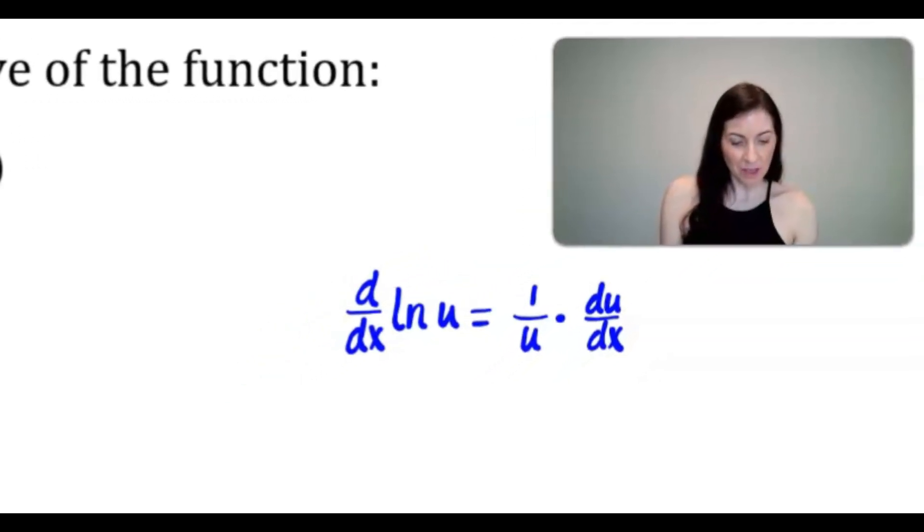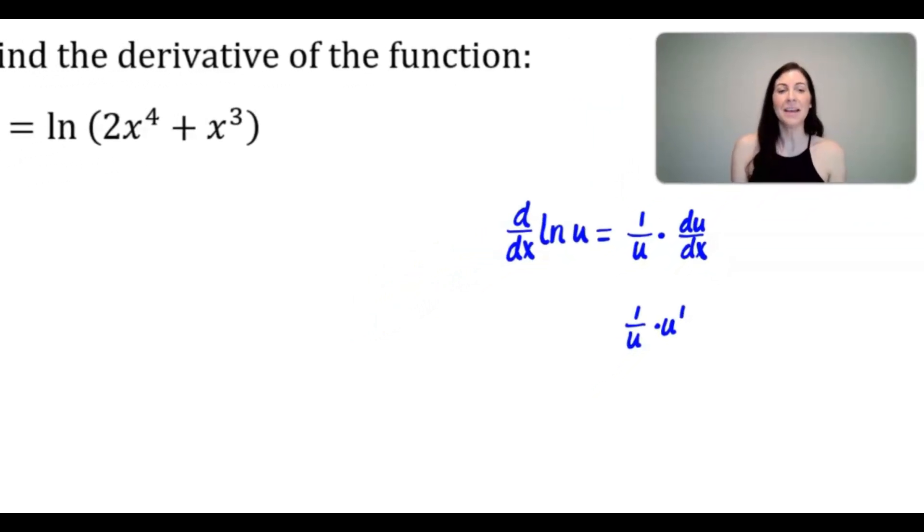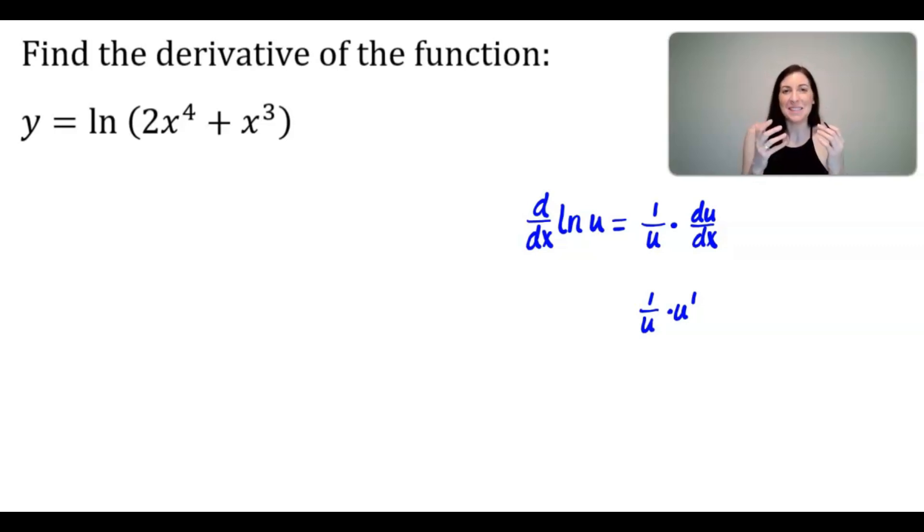Sometimes people like to think of this as 1 over u times u prime. A lot of times that's what I think in my mind because it's a more compact form. And in that case, you can think of this being u prime over u. So let's see how we would put this formula to use in our problem. In terms of notation, I would want to write y prime since I am now finding the derivative of this natural log function.